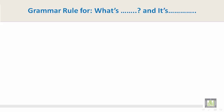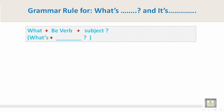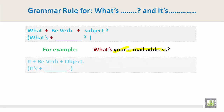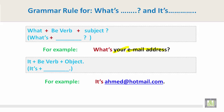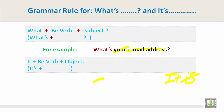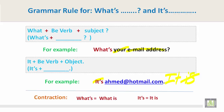Grammar rule for what's and it's. What plus the be verb plus the subject — what's. For example: What's your email address? It plus the be verb plus object — it's. For example: It's Ahmed at hotmail.com. We know that it's is really a contraction of it is; is is the verb. A contraction: what's is a contraction of what is; it's is a contraction of it is.